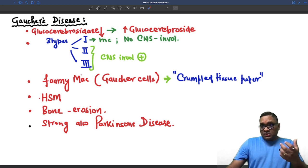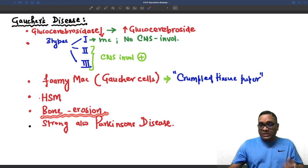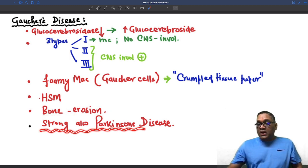Because of glycogen deposition in the liver and spleen, there is enlargement called hepatosplenomegaly. There is involvement of the bone marrow leading to bone marrow erosion.